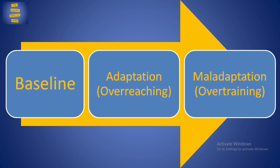The initial state of adaptation is called overreaching, and the later stage of maladaptation is called overtraining. The systems best studied so far for the effects of too much exercise are the immune system, the endocrine system related to hormones, and the nervous system. Common symptoms of overtraining are fatigue, lack of motivation, depression, decreased muscle performance, and muscle soreness.